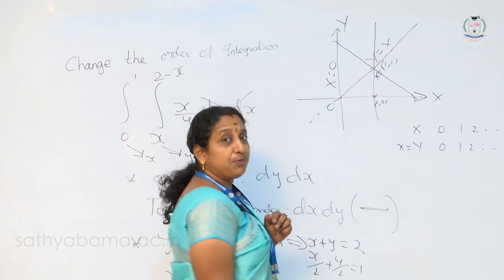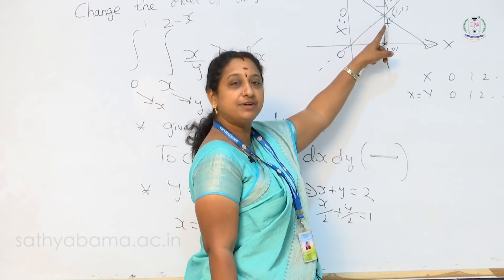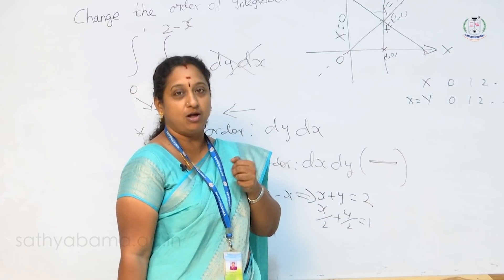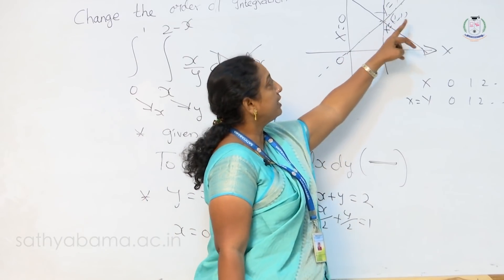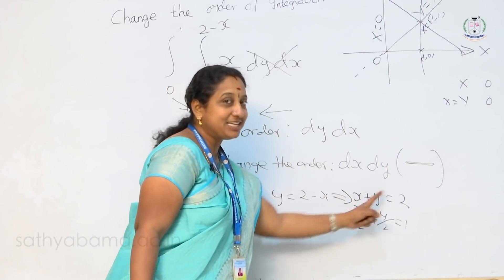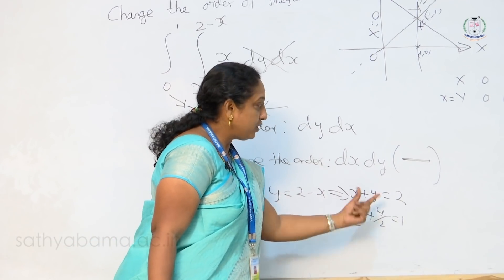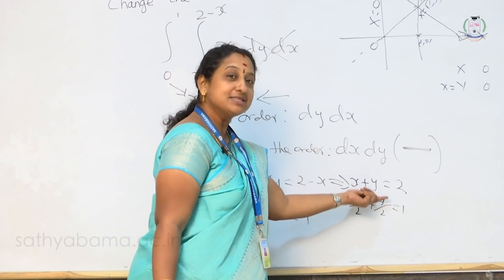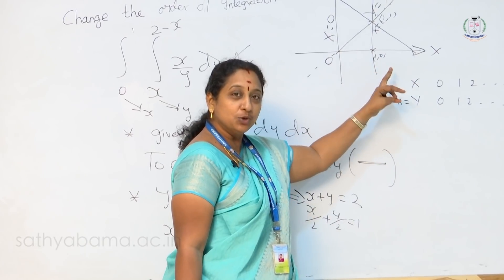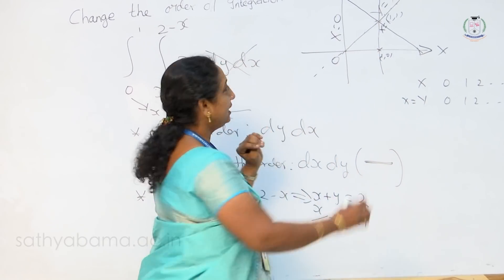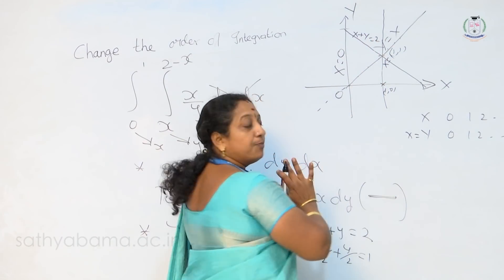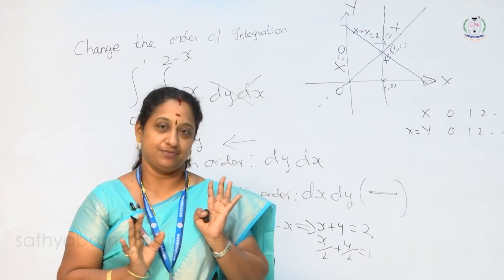We may have doubt whether the line x plus y equal to 2 passes through this point of intersection or somewhere else, so we have to check. Substitute the point (1,1) into the equation: 1 plus 1 equals 2 — it is satisfied. This implies that the line x plus y equal to 2 passes through the point of intersection (1,1). So this is the line x plus y is equal to 2. We have now plotted all four regions.